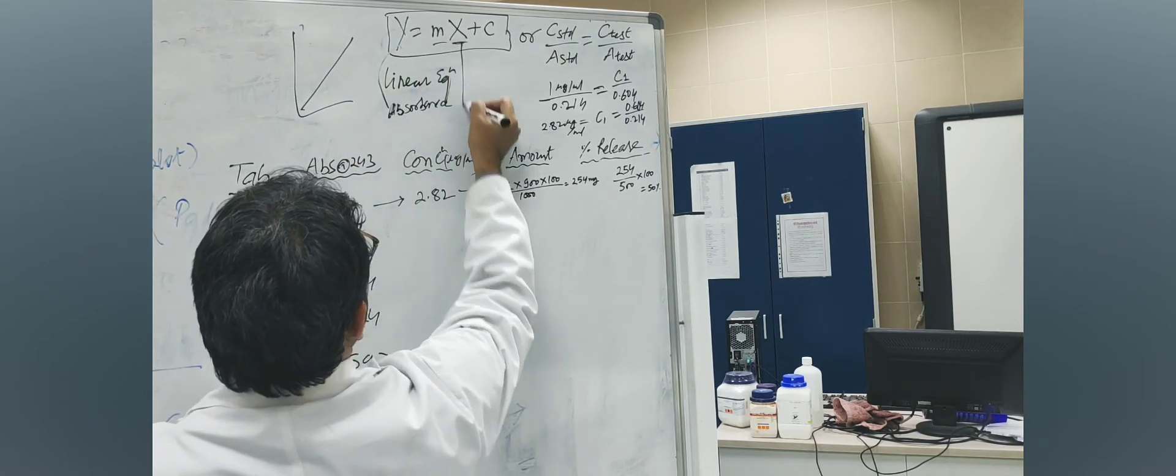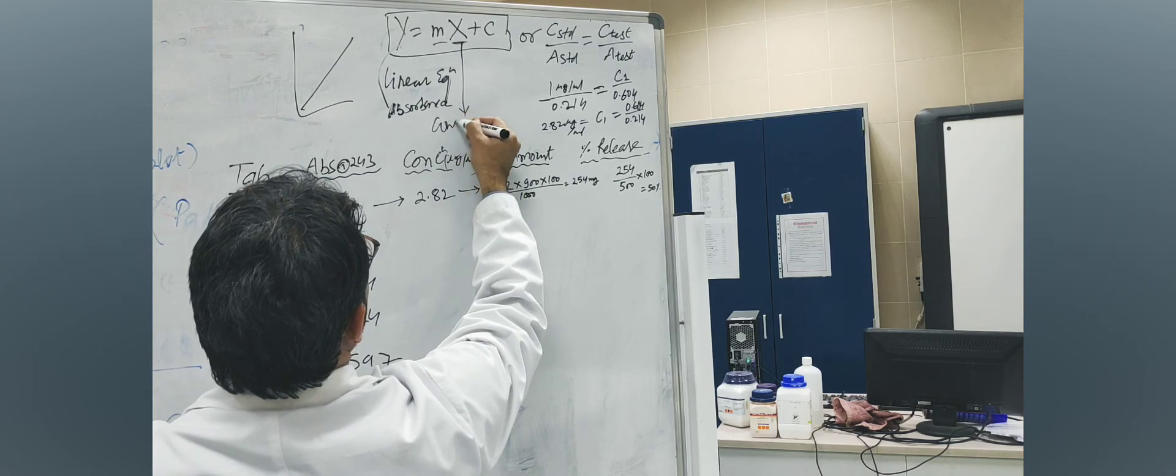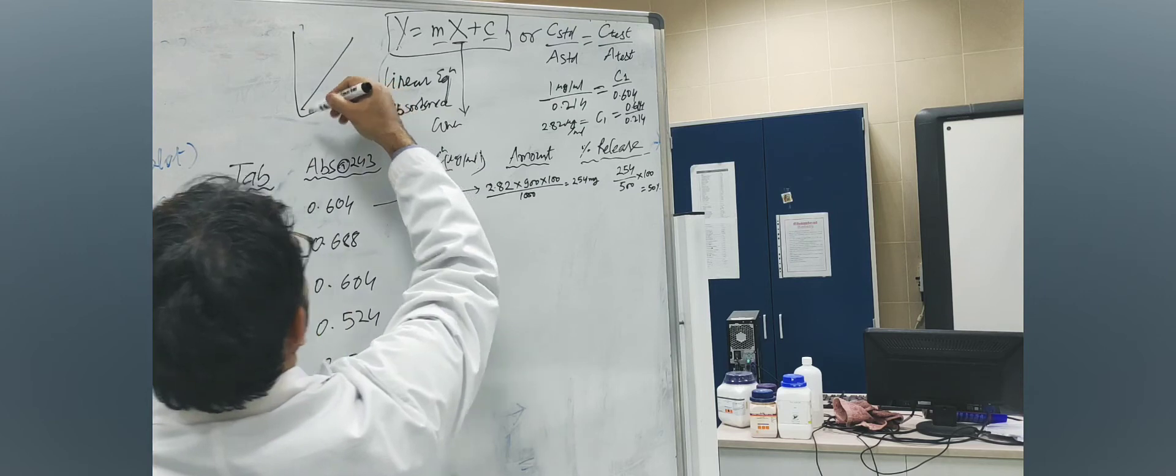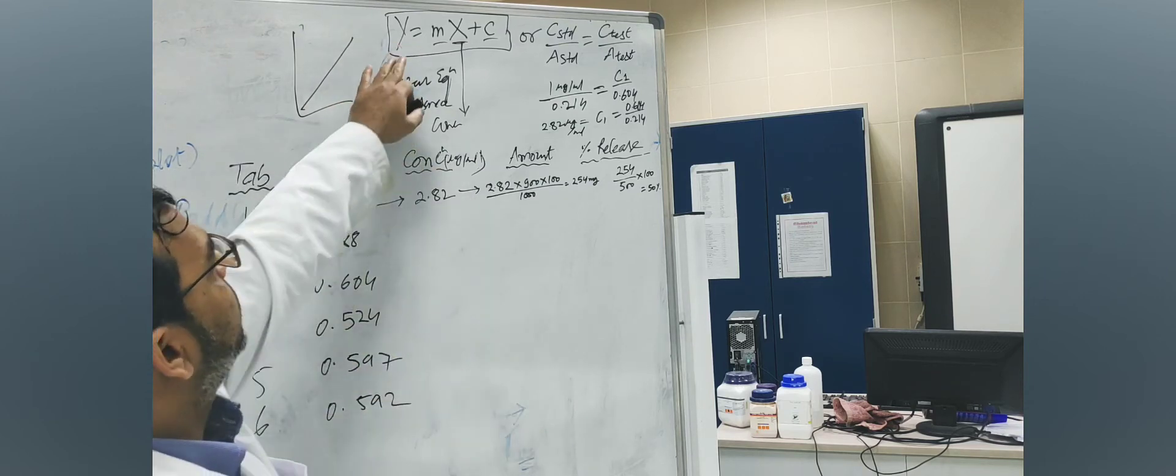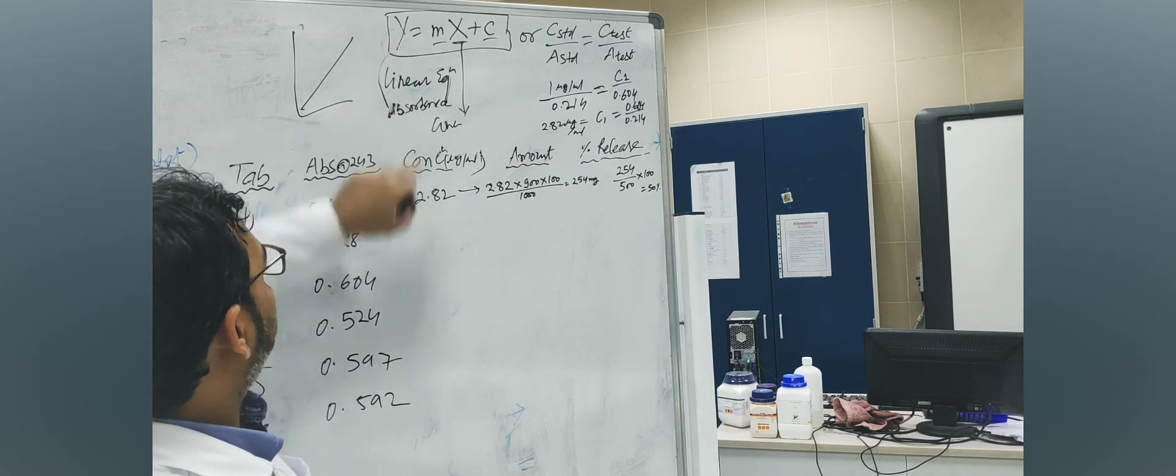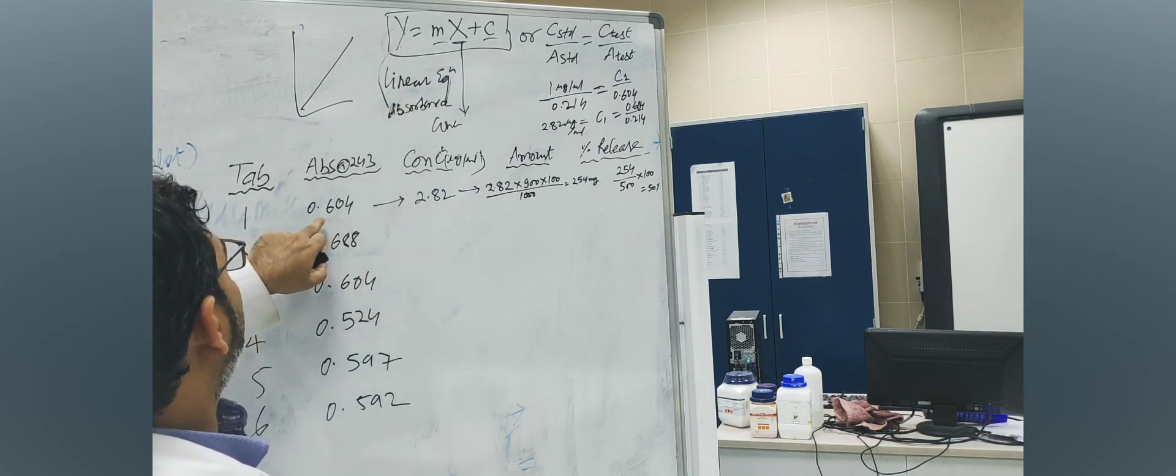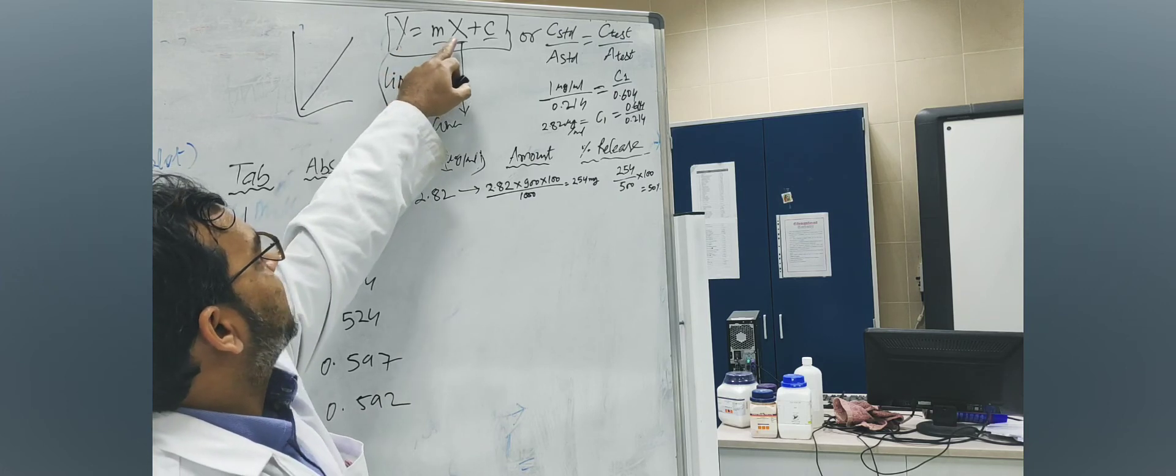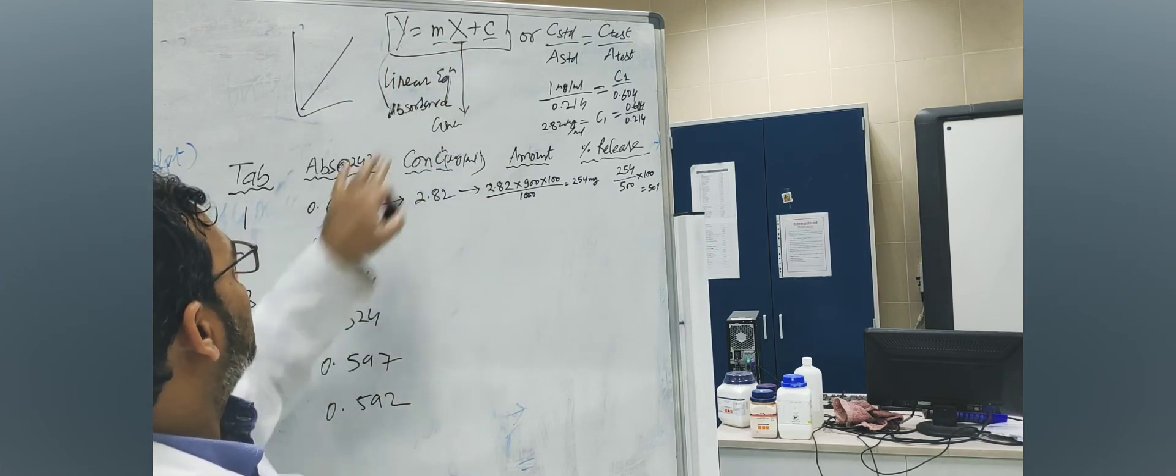X is what you need. It is concentration. Whatever you get you will put it here. C is the intercept of the slope. So once you have this equation ready with you, you can put your absorbance, this is 0.604, put it here as the absorbance and you will get X values. You will calculate like this.